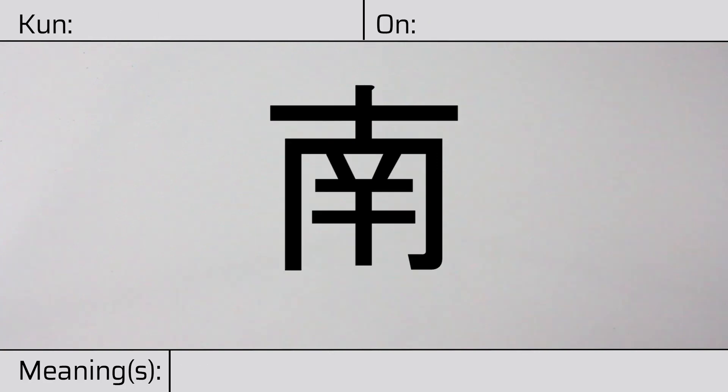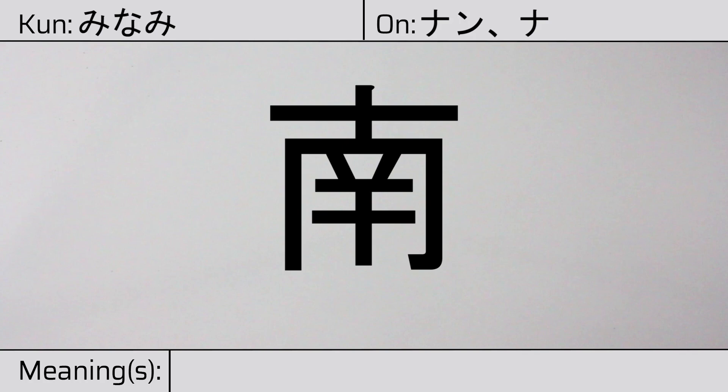Welcome to this lesson on Japanese kanji. Today, we'll be discussing this character. This kanji has kunyomi, or Japanese reading of minami. And it has onyomi, or Chinese readings of nan or na. This character has the meaning 'south.'